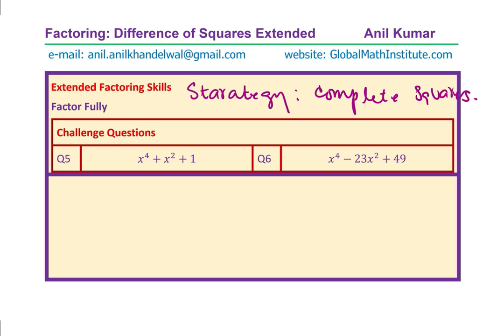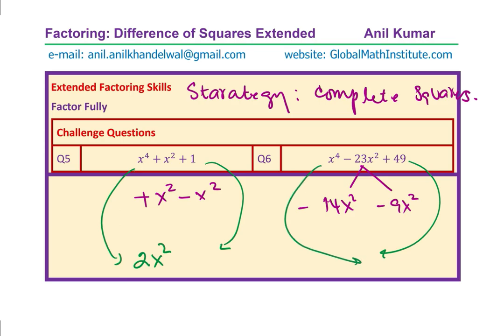So in this particular case we added x square and we subtracted x square, and in this particular case we wrote 23 as sum of minus 14 x square and minus 9 x square. Simply because the term from here 2 x square was 2 times x square. You get the idea because of this and in this case if you multiply two terms we get 14 x square, right? That is why we got this 14.